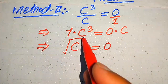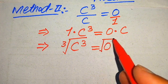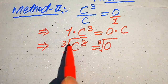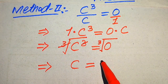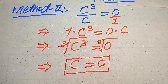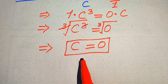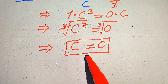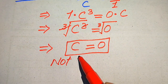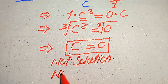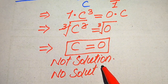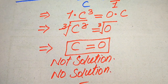To find the value of c, we take the cube root on both sides to remove the exponent of 3. The cube root and the 3 cancel, giving us c equals the cube root of 0, which is 0. In the second method we also get c equals 0, but as verified in the first method, this value does not satisfy the given equation — it is the extraneous root. Therefore, the given equation has no solution. Thank you for watching; please subscribe for more videos.